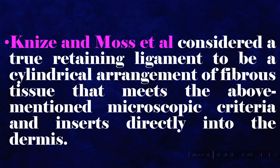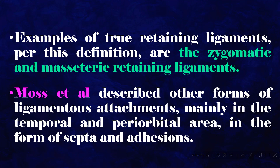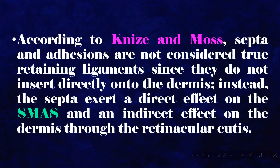Nyes and Moss et al. considered a true retaining ligament to be a cylindrical arrangement of fibrous tissue that meets the above-mentioned microscopic criteria and inserts directly into the dermis. Examples of true retaining ligaments per this definition are the zygomatic and masseteric retaining ligaments. Moss et al. described other forms of ligamentous attachments, mainly in the temporal and periorbital area, in the form of septa and adhesions. According to Nyes and Moss, septa and adhesions are not considered true retaining ligaments since they do not insert directly onto the dermis; instead, the septa exert a direct effect on the SMAS and an indirect effect on the dermis through the retinacular cutis.